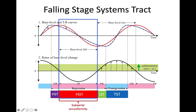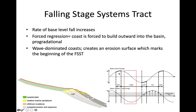In the falling stage systems track, base level fall starts moving faster and faster through time, moving into a massive regression with negative sedimentation rates. We'll typically see a lot of unconformities here. FSSTs and LSTs are actually less common to find in real life because of all the unconformities and erosion. This is typically a forced regression — the coast building outward into the basin as sea level falls, regardless of how much sediment is piling in. We start to see wave-dominated coasts forming where deeper waters once existed, creating an erosional surface marking the boundary of our FSST into the low stand tract.